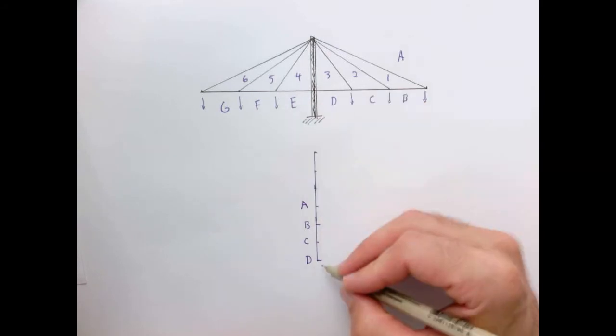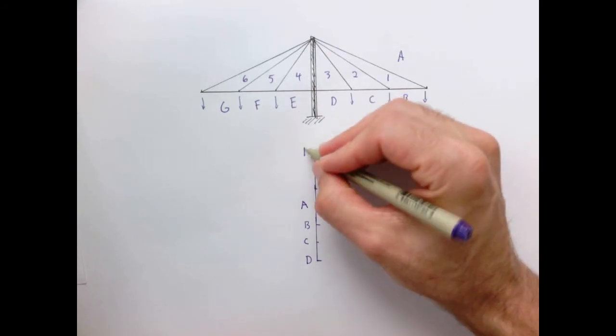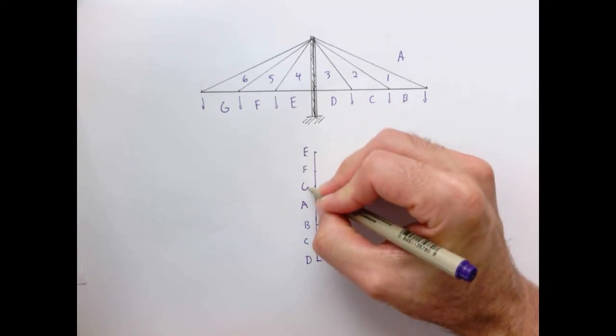D to E we go up six. One, two, three, four, five, six. E, F, G.